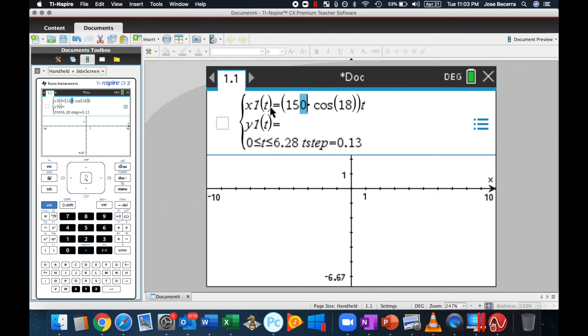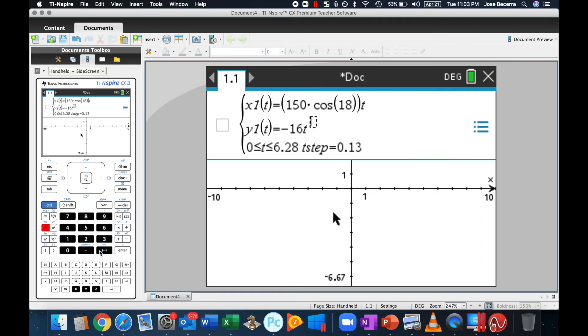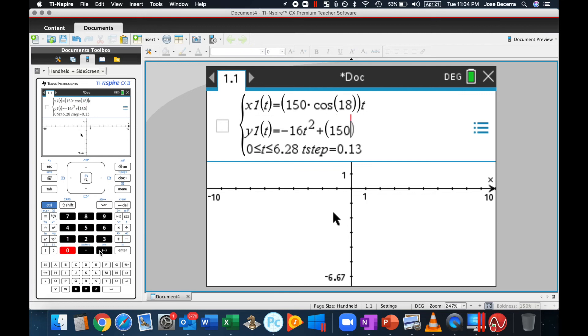And then, for my y value, let's go down here. We have, all right, this is a big one, negative 16 times t raised to the second power and plus 150 times the sine, because this is, again, a vertical of 18 degrees, times t, plus the initial height of 3 feet.